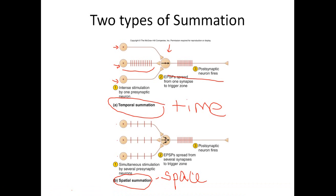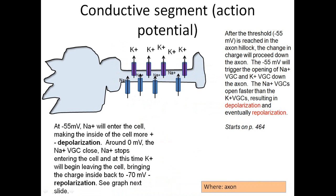The next thing we have to cover is the conductive segment, which is really the action potential. This is where the information is going to travel down the axon of the neuron.